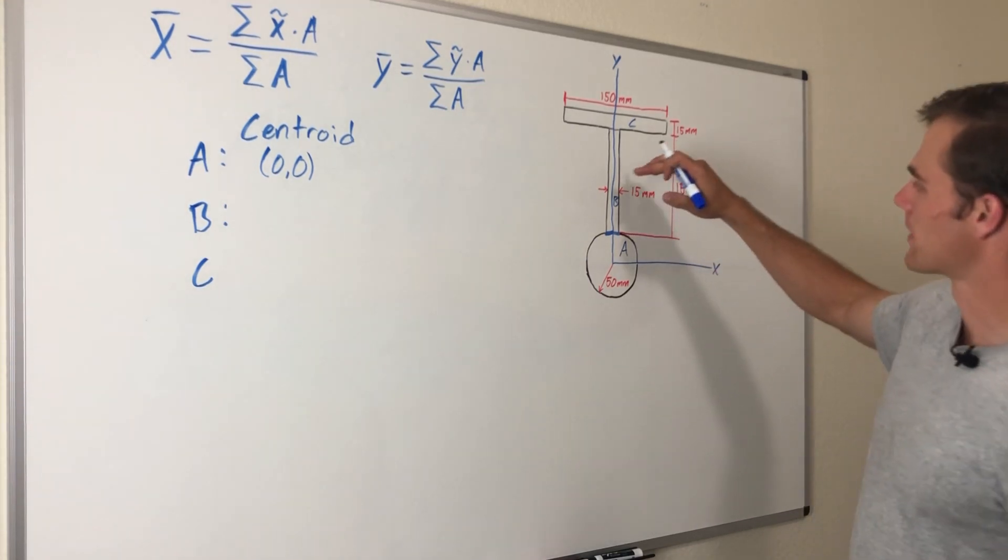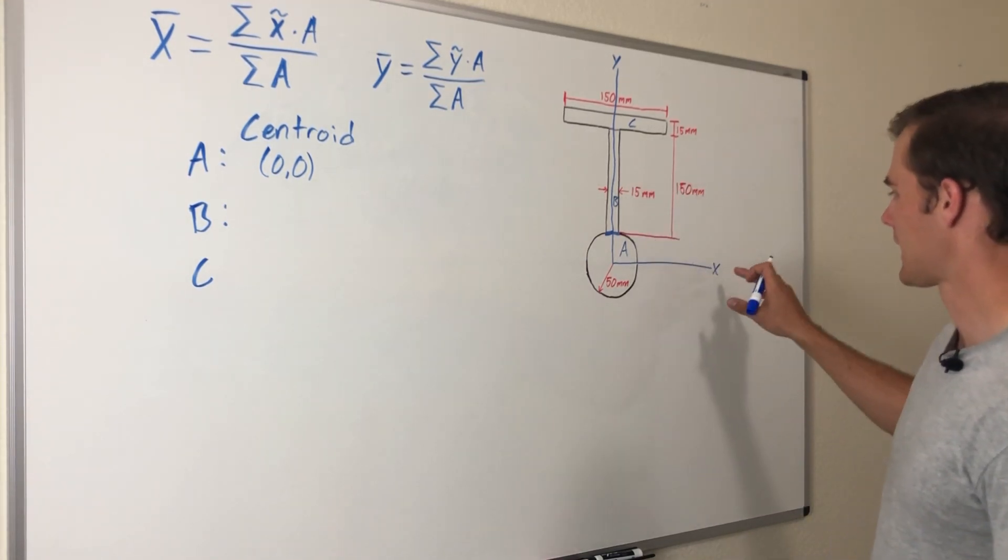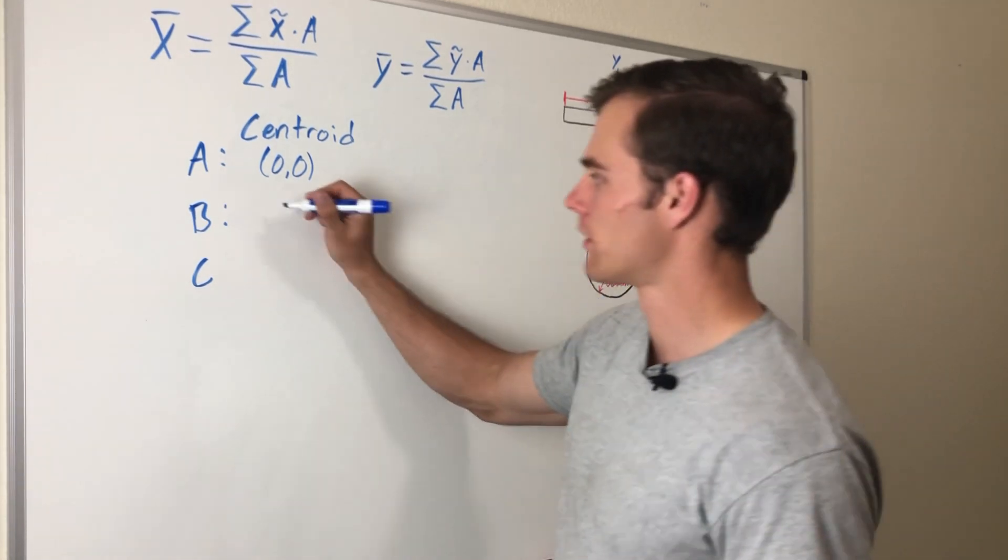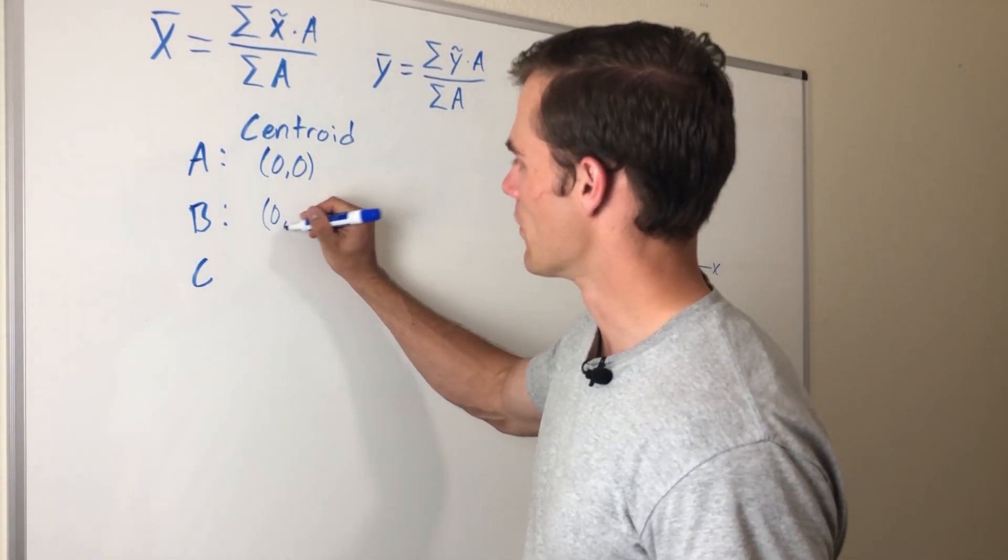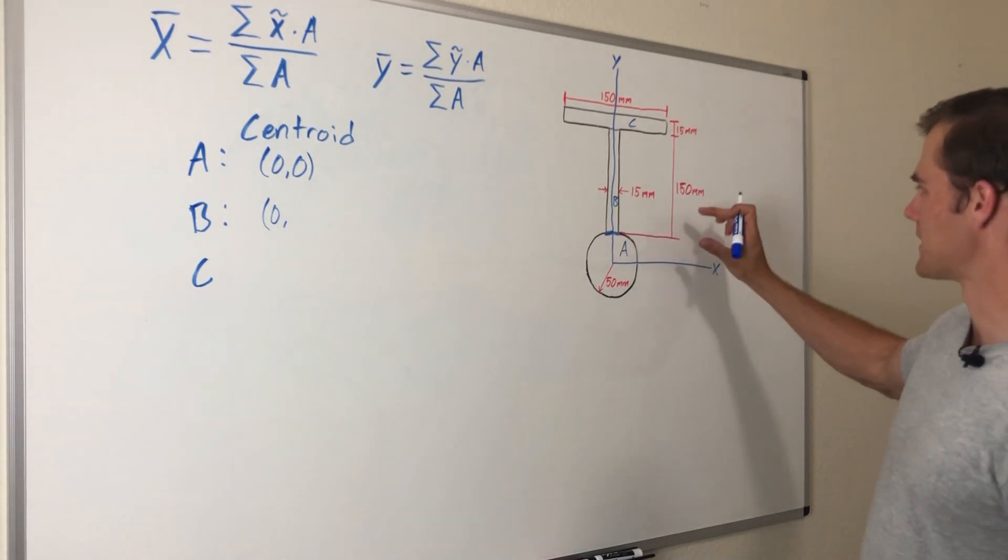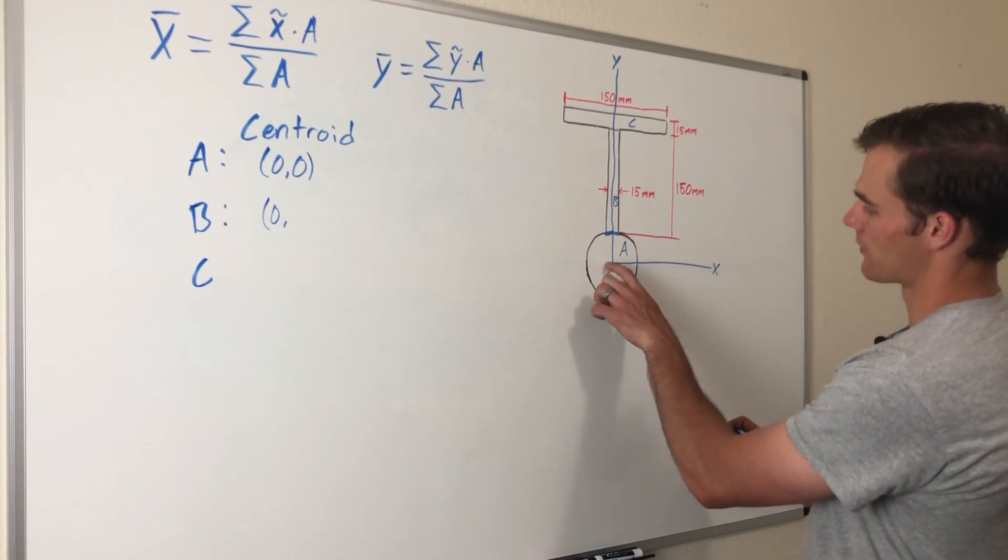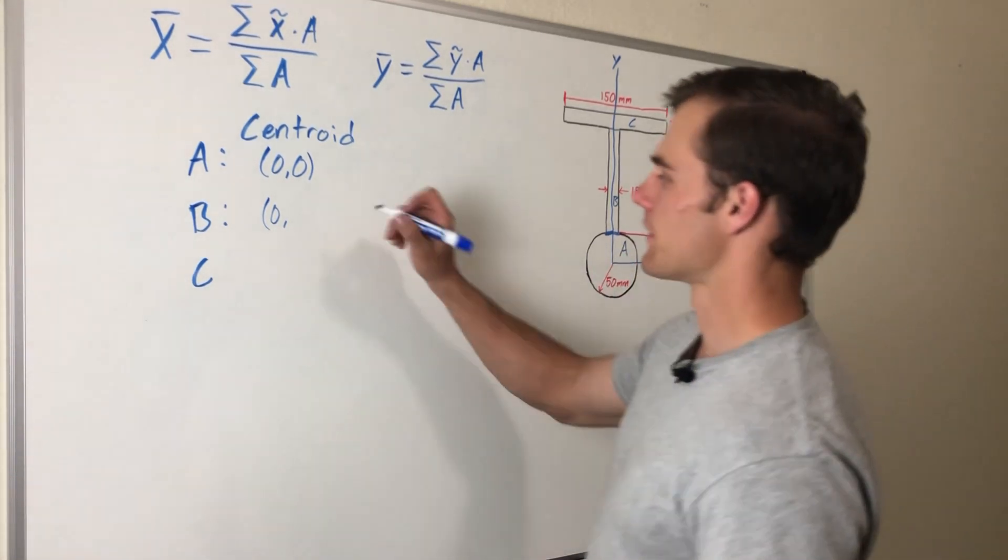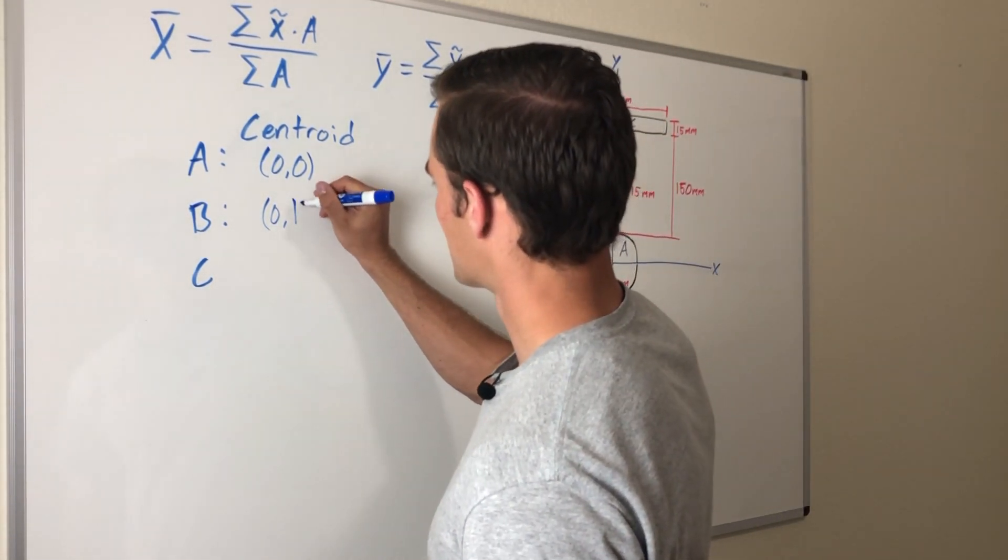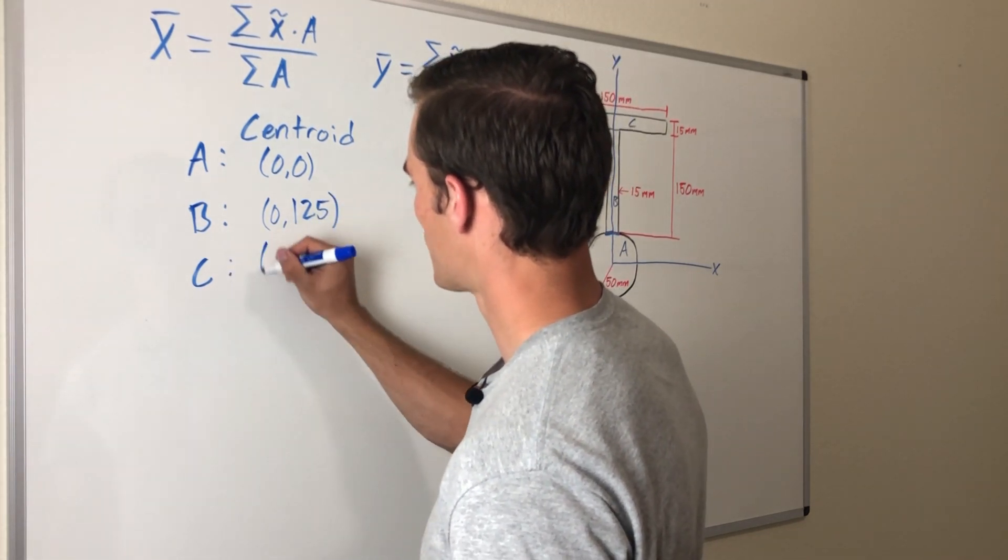For B, it's going to be right in the middle, so that lies on our y-axis, meaning the x coordinate is zero. The y coordinate is halfway up, so that'll be 75 millimeters plus our 50 millimeters for the radius of our circle. 75 plus 50 is 125.